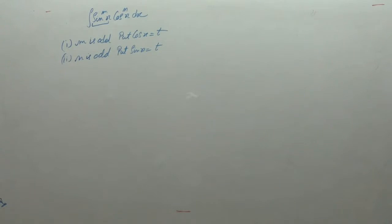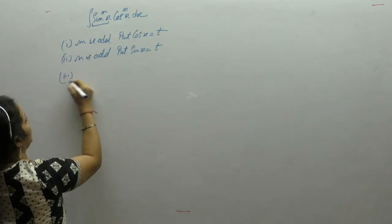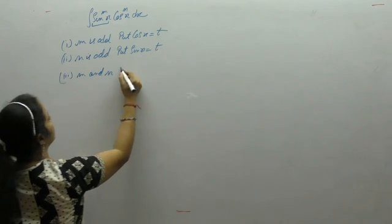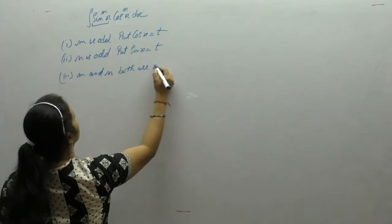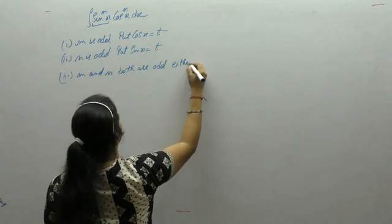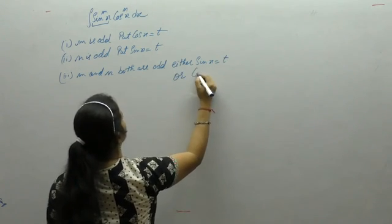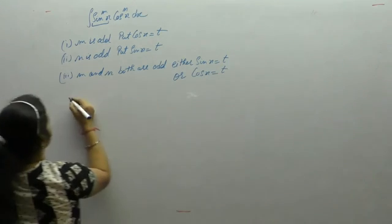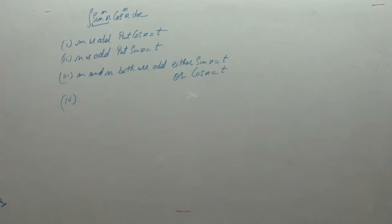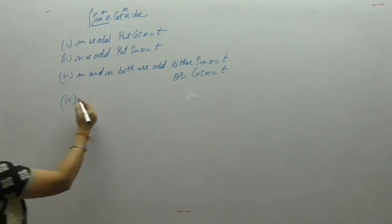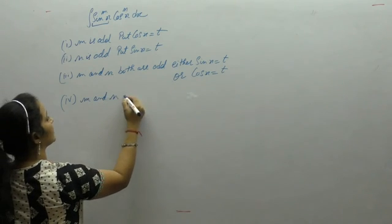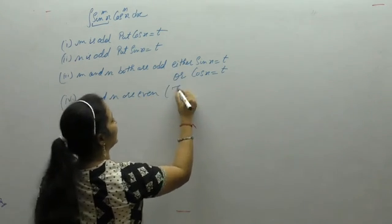If m and n are both odd, then we put either sin x as t or cos x as t. If both m and n are even, then we use their trigonometric identities and after that solve the integral.